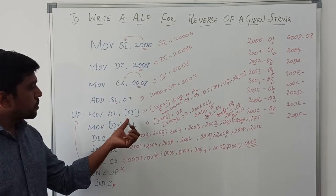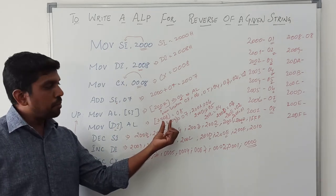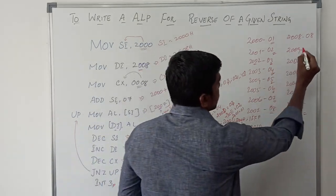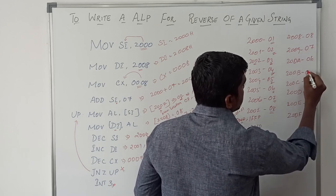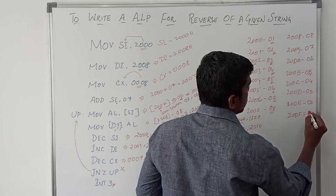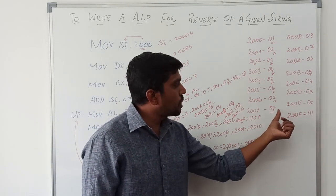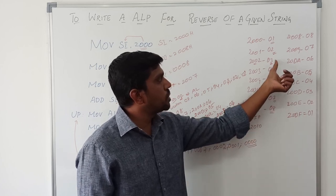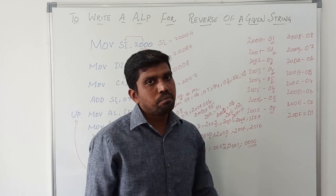So here we have transferred the source index data to destination index data. The corresponding memory location is mentioned here and the corresponding data is written in the specified memory location. Starting from 2008, the data is: 08, 07, 06, 05, 04, 03, 02, 01. This is the output result — the output result is stored in reverse order. So 08, 07, 06, 05, 04, 03, 02, 01 — in this reverse order, the data is stored in the output memory location.